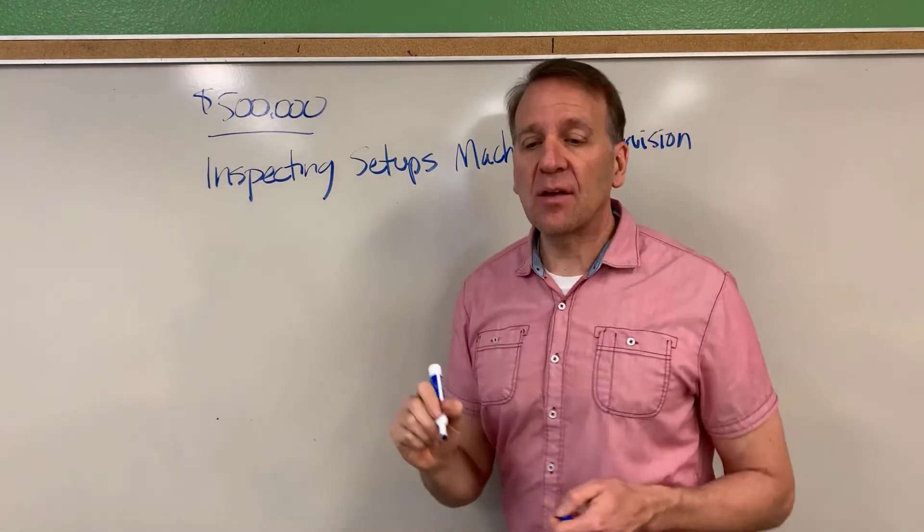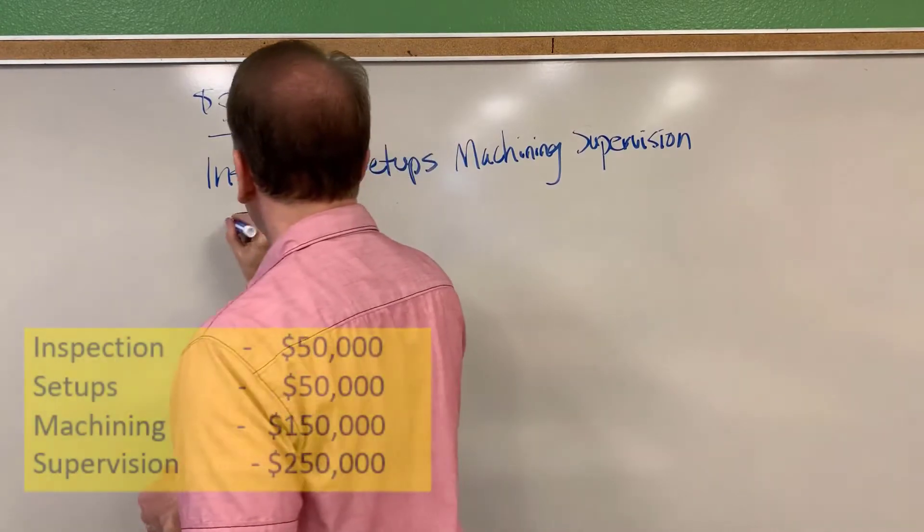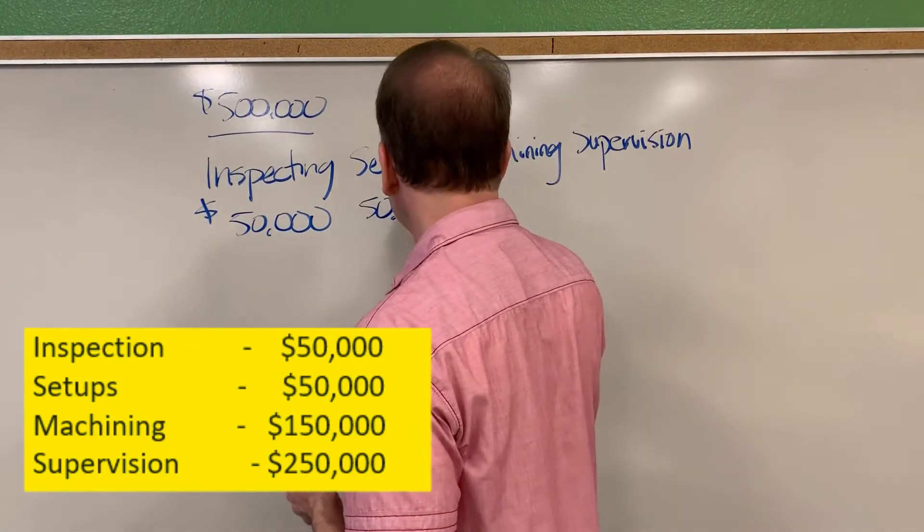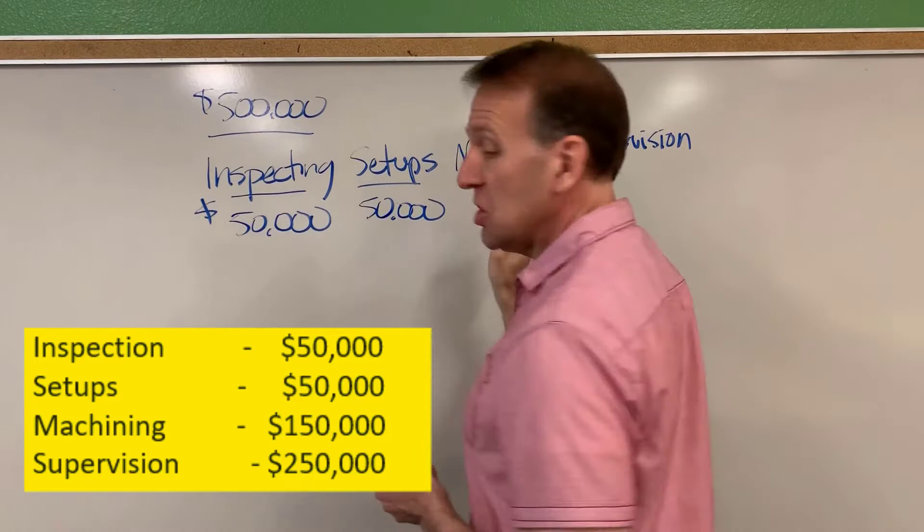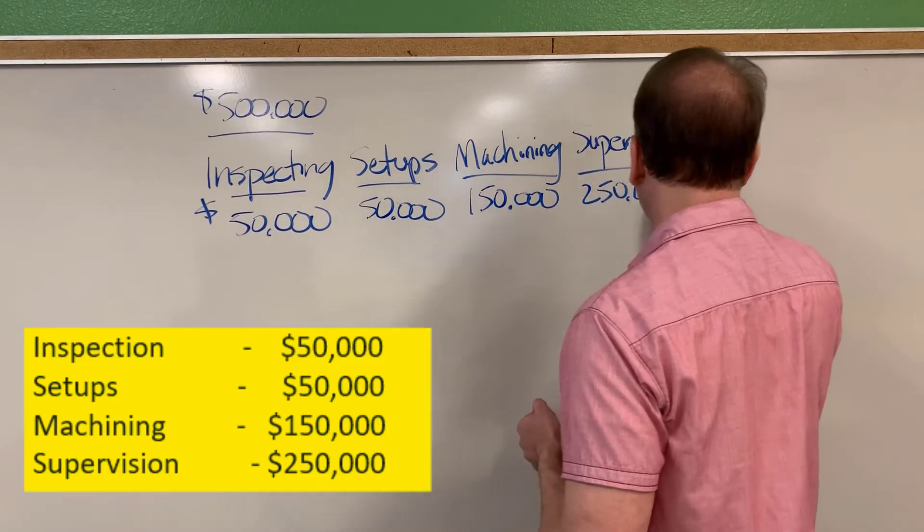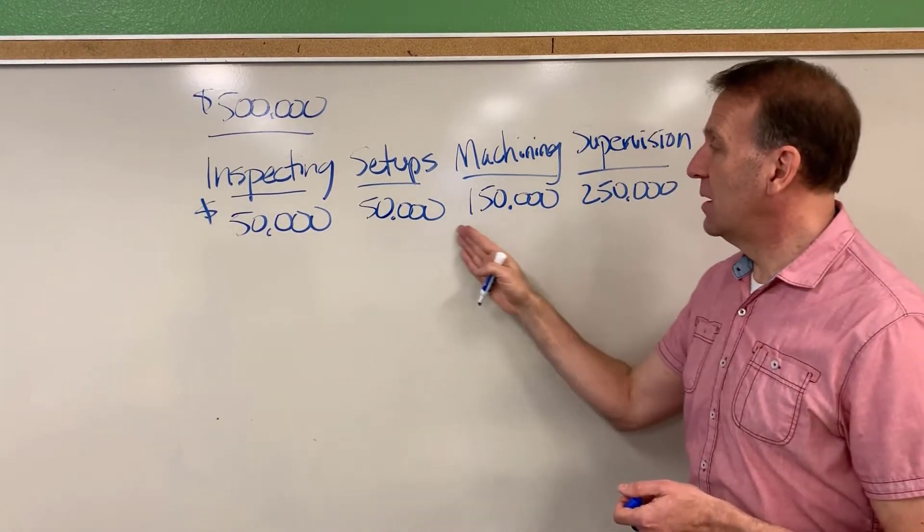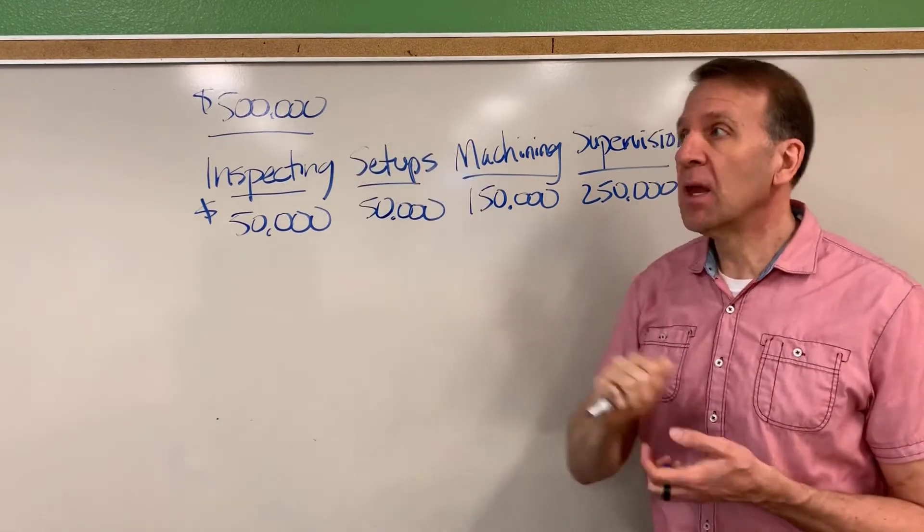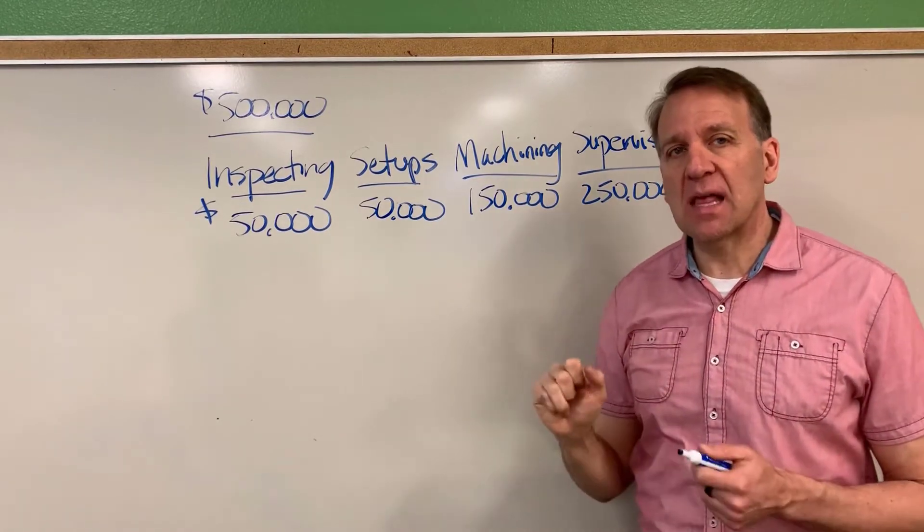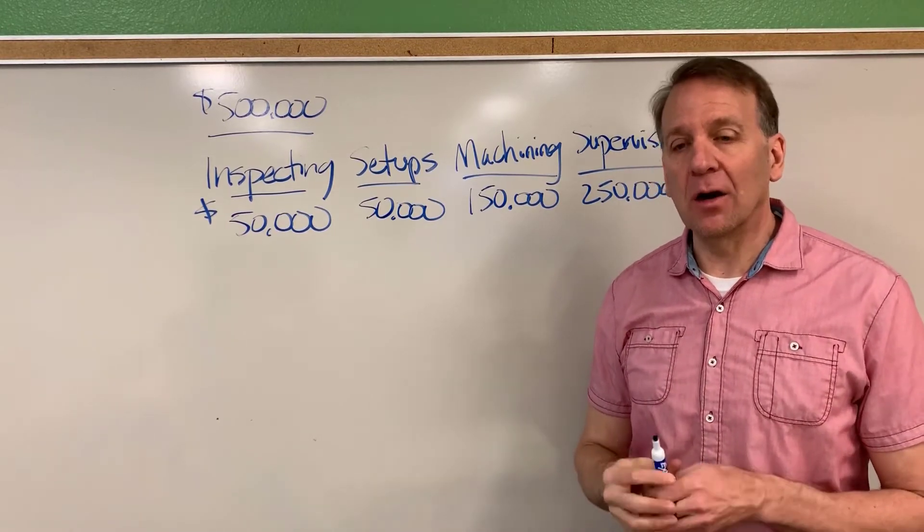And the costs associated, the overhead costs associated with each one of these activities is as follows: $50,000 for inspecting, setups is also $50,000, machining is $150,000, and the supervision is $250,000. So if you add these up, you can see that adds up to the $500,000. So we're taking the $500,000 and we're dividing it up into different activities that take place, and then we're putting those overhead costs into each one of those areas where they are incurred.